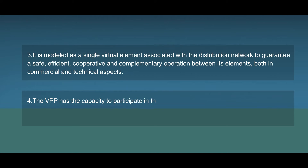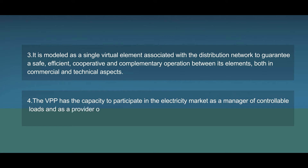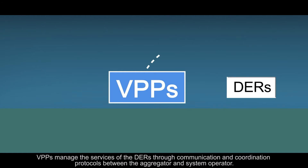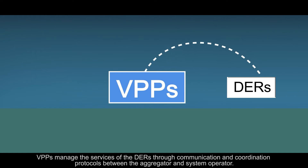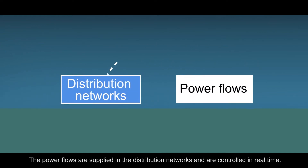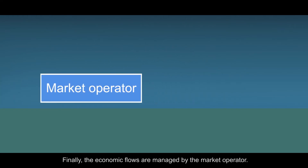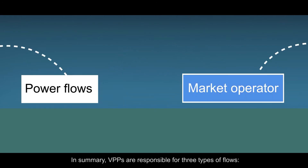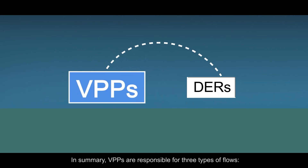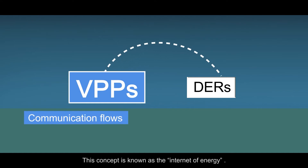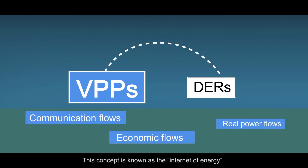The virtual power plant has the capacity to participate in the electricity market as a manager of controllable loads and as a provider of energy, power reserve and ancillary services. Virtual power plants manage the services of the distributed energy resources through communication and coordination protocols between the aggregator and system operator. The power flows are supplied in the distribution networks and are controlled in real time. Finally, the economic flows are managed by the market operator. In summary, virtual power plants are responsible for three types of flows: communication and economic flows and real power flows in the grid.